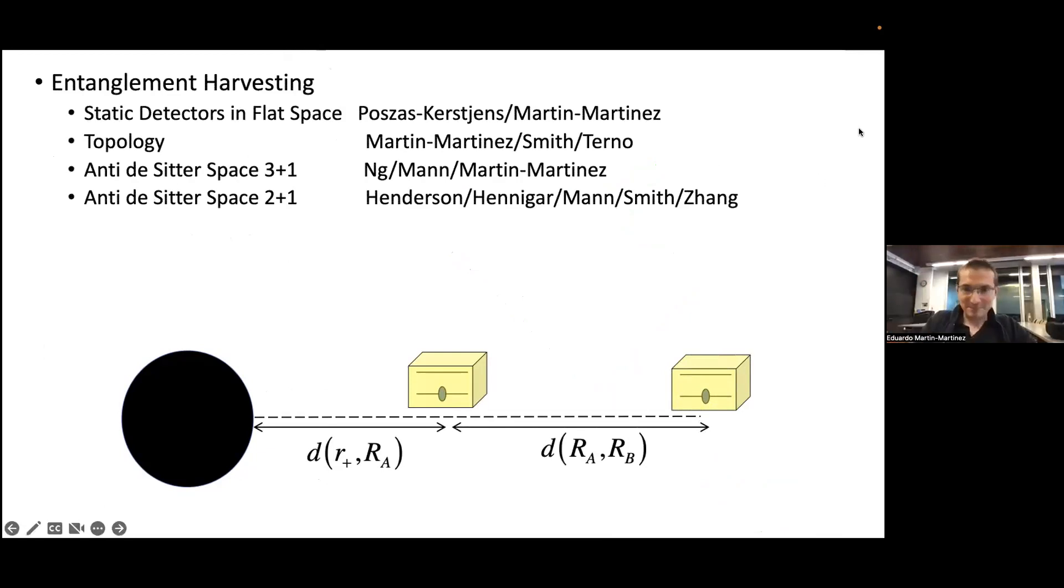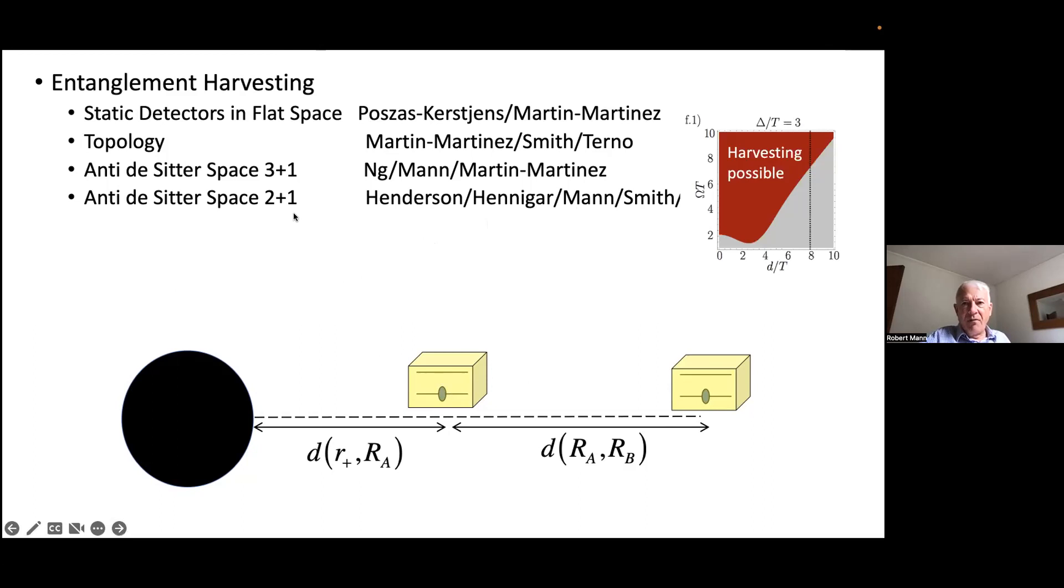Entanglement harvesting was discussed in quite a number of papers. The idea is you have an object like a black hole and you put a pair of detectors about it with some trajectories, often static but not necessarily, and you see what happens to their correlations. The answer is something quite different due to the horizon of the black hole. The first detailed study was done by Alejandro Pozas-Kerstjens and Eduardo. There were studies on the topology in anti-de Sitter space. Lee Hodgkinson and Jorma Luko studied how detectors respond outside a two plus one black hole, and then the harvesting was looked at a few years later.